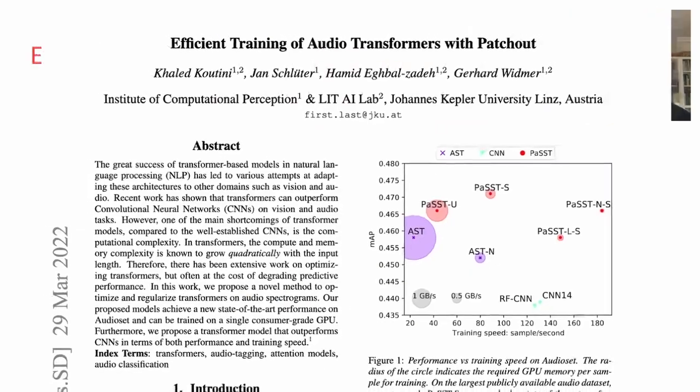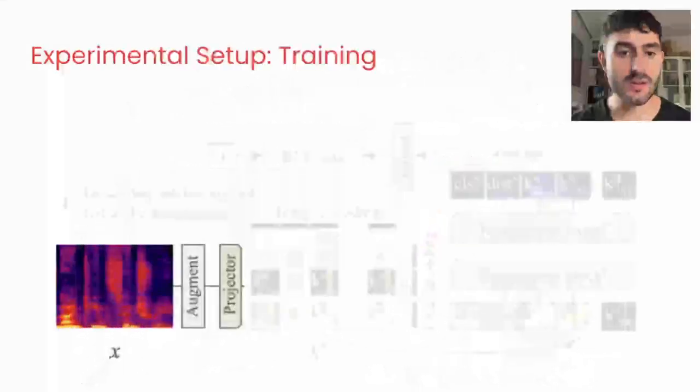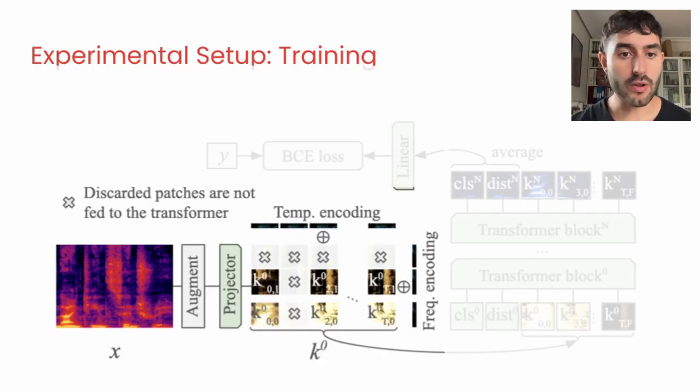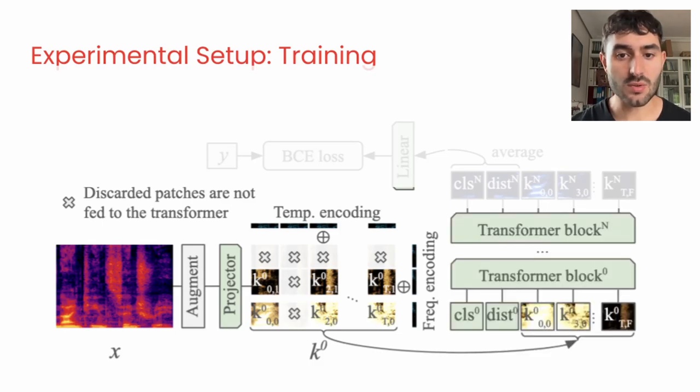Our training setup is the same as in the PaSST paper, and our spectrogram is augmented and divided into patches, passed through linear layers, and combined with positional encodings. We randomly discard complete columns and rows of input patches, a technique known as structured patchout. The remaining patches plus a class and distillation tokens are passed through 12 transformer blocks.